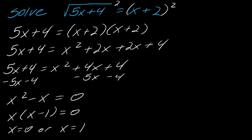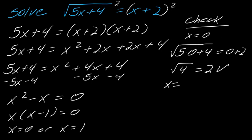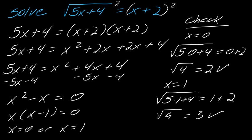Let's go back and check. Starting with x equals 0: the square root of 5 times 0 plus 4 equals 0 plus 2, which gives square root of 4 equals 2 — that works. Now x equals 1: the square root of 5 times 1 plus 4 equals 1 plus 2, which gives square root of 9 equals 3 — that still works too. Both solutions are valid.